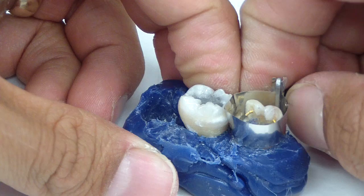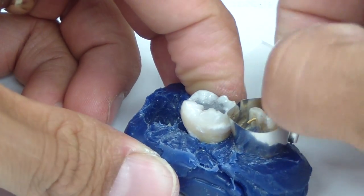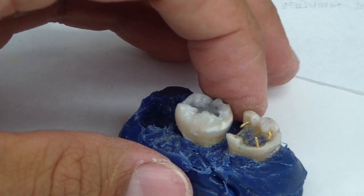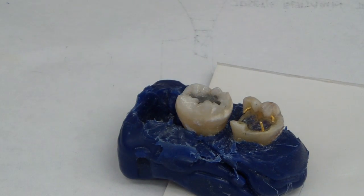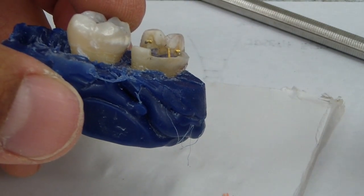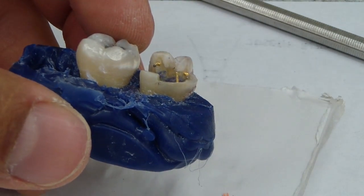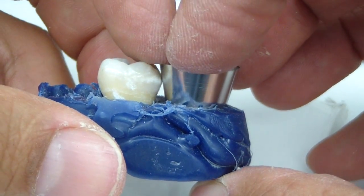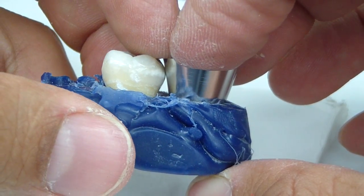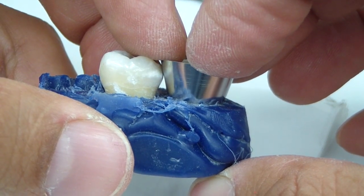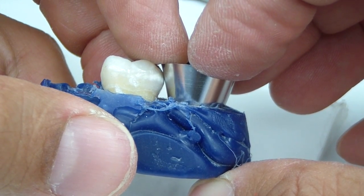So one way you can mitigate that is by precontouring your matrix. So let's compare just a regular matrix, I'm going to use the auto matrix, but essentially it's the same for all of them, Toffelmeyer included. When we place it under the tooth, we get that sort of straight, no contour, straight from the gingival box all the way to our point contact.